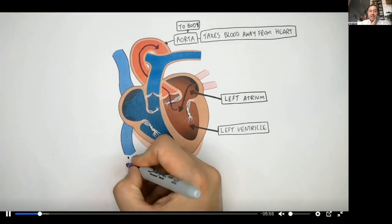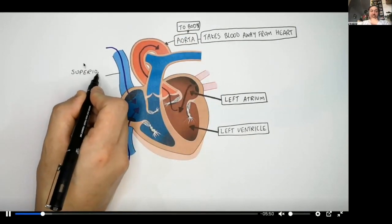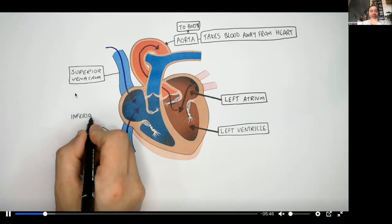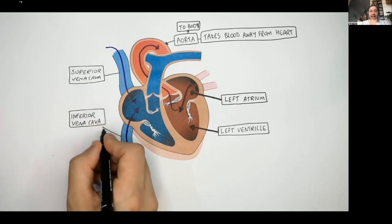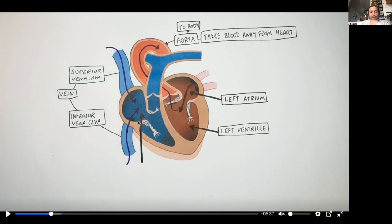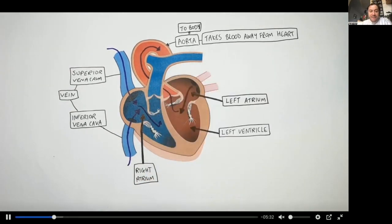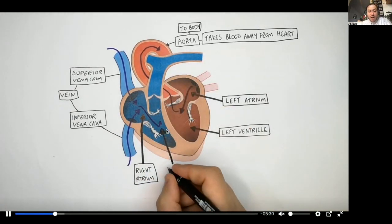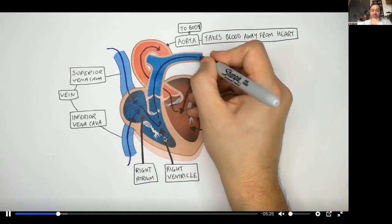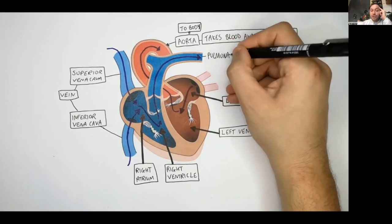Then deoxygenated blood returns back to the heart via the vena cava. This is the superior vena cava, and this here is the inferior vena cava. Blood is then pumped into the right atrium and into the right ventricle.